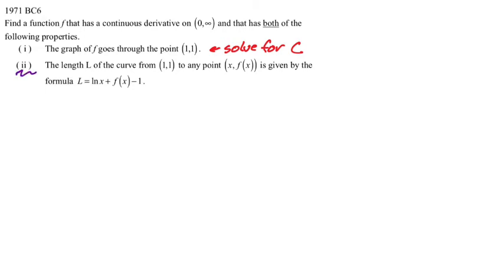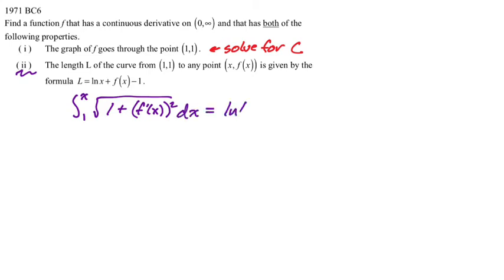Arc length in general should just be the integral from 1 to x of the square root of 1 plus f prime of x squared dx, and we're told it's equal to that expression. It's a weird idea that it would equal that, but that's definitely an equation we can set up. Interestingly, in the original 1971 problem they gave you the arc length formula, which I think is crazy — they would not do that today.